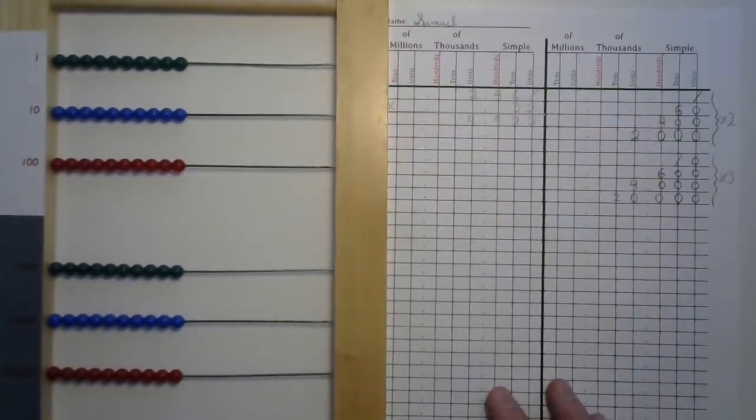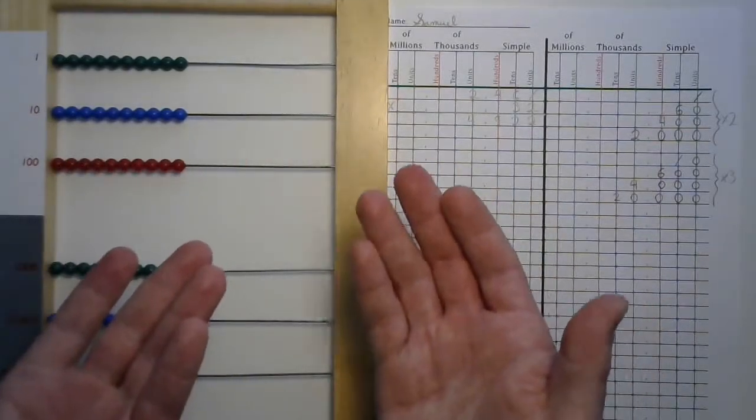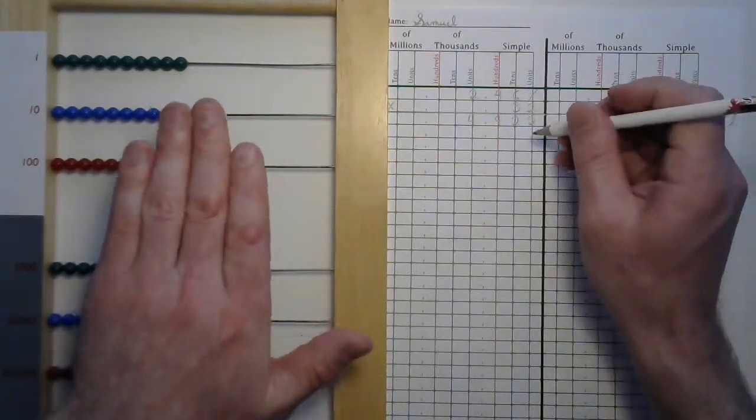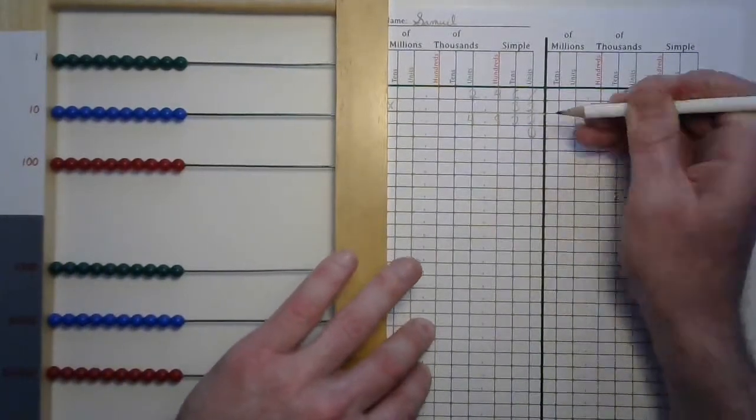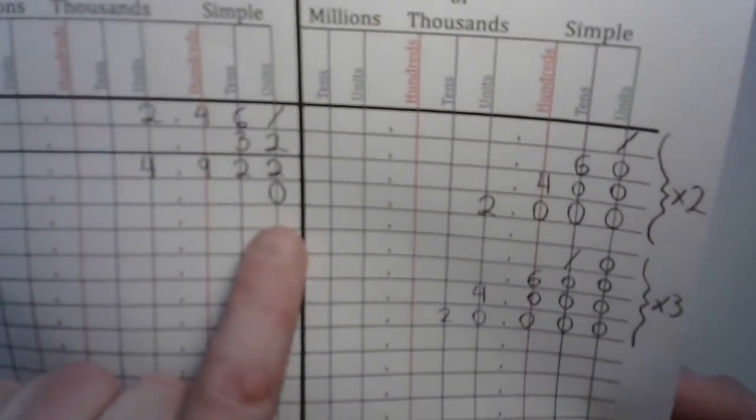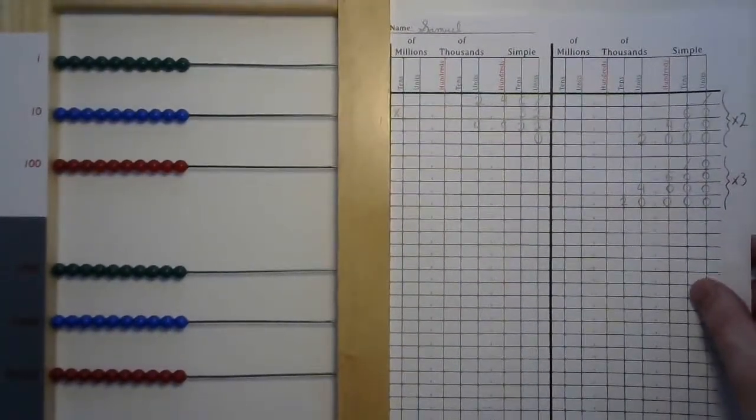We're going to start on our tens wire. But wait, what about our units wire? There's nothing there. Let's record that before we start this next digit by putting a zero right on that units wire. The start of our second partial product. All right, now let's roll through.